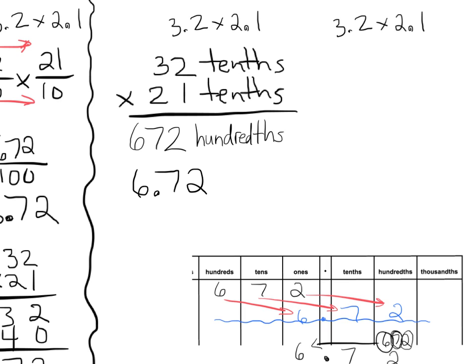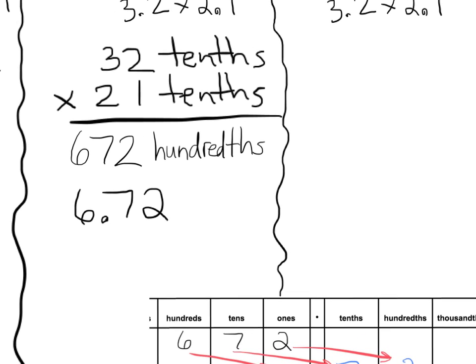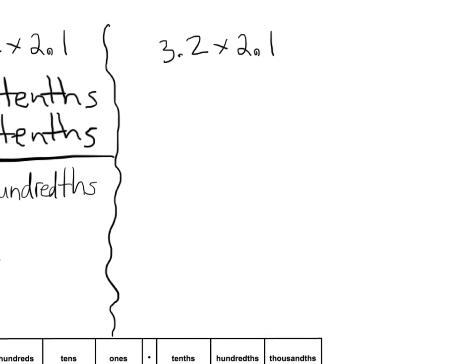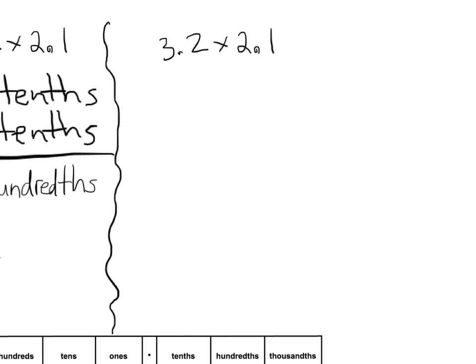So now we have a third and final way of thinking about this. And this third and final way is one of the partial, I don't know, supplementary method that Engage New York talks about. And here's what we're going to do. We're going to think of this as 3.2 times 2.1. But I'm going to multiply this guy by 10, and I'm going to multiply this guy by 10 so that we end up with 32 times 21.